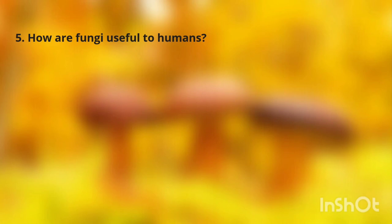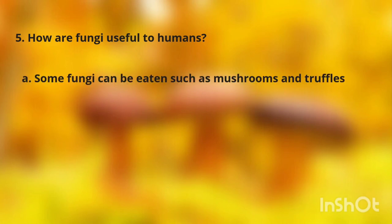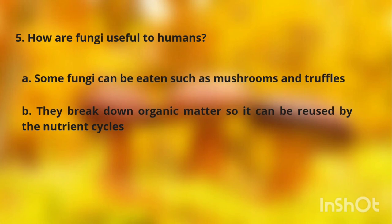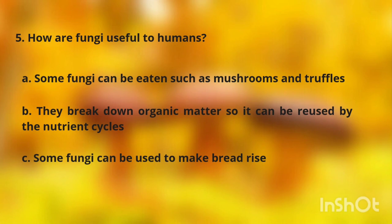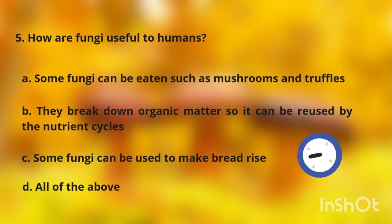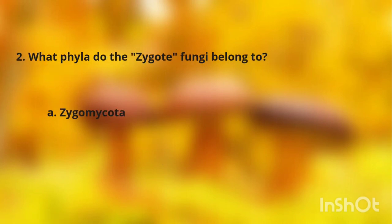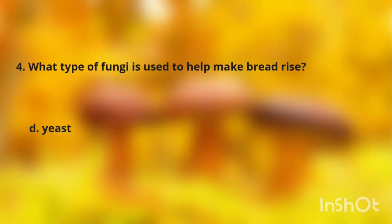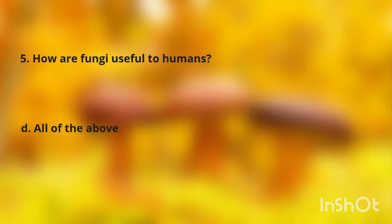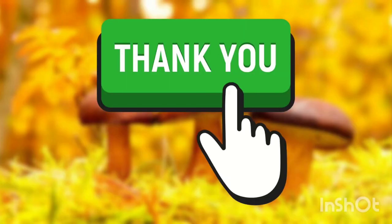Question five: how are fungi useful to humans? A. Some fungi can be eaten, such as mushrooms and truffles. B. They break down organic matter so it can be reused by nutrient cycles. C. Some fungi can be used to make bread. D. All of the above. The answers are: number one — B, number two — A, number three — C, number four — D, number five — D. Thank you for watching this video lesson.